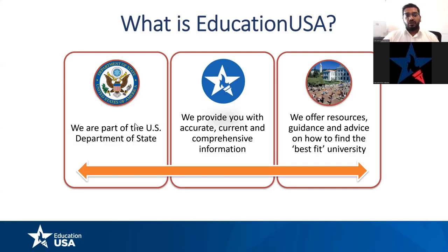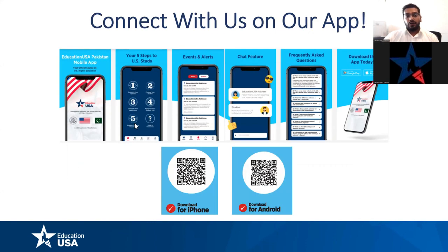A brief introduction about what EducationUSA is. EducationUSA is a part of the Department of State Network with over 435 international student advising centers in more than 175 countries and territories. The network promotes higher education in the US, and we are the official source of information for higher education in the United States. We also offer free advising services — you can go online on our webpage and sign up. We also have an app where you can access our frequently asked questions, chat with advisors during work hours, and get events and alerts.